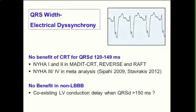Why is that? The longer and wider the QRS, the more electrical dyssynchrony there should be. So it makes sense that there's no benefit of CRT for QRSs of less than 120 to 149 milliseconds. This was observed in all the class 1 and 2 trials. And retrospectively looking at the earlier class 3 and 4 heart failure trials in a meta-analysis, again there was very little effect, if any, when the QRS was less than 150 milliseconds. So the 150 millisecond mark seems to be important.